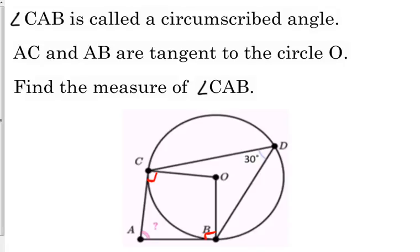Notice, we're also given an inscribed angle. We're going to use that inscribed angle to find the angle CAB. So if we know this angle down here at D is 30 degrees, what else can we label?